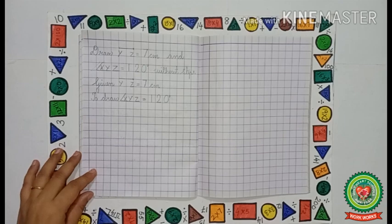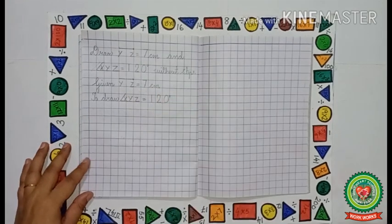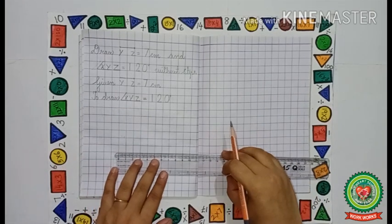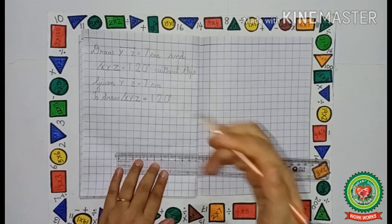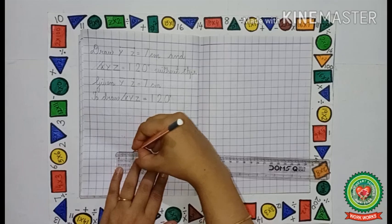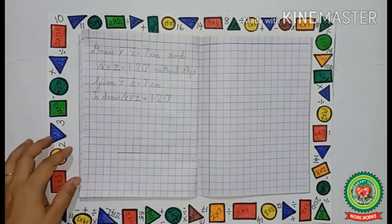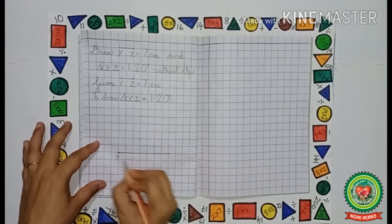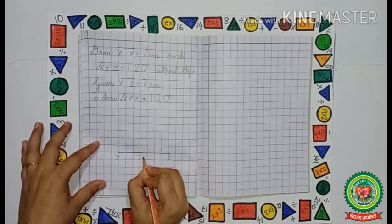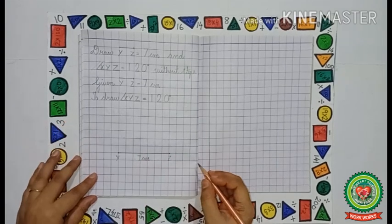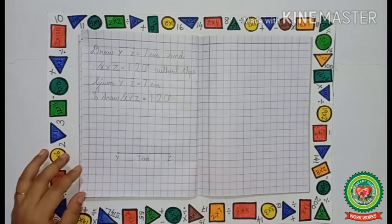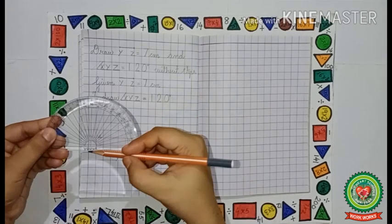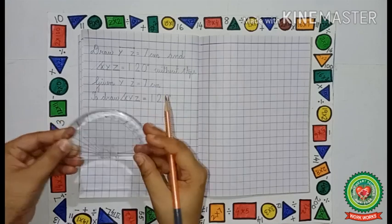First of all, we will draw the line segment YZ of 7 centimeters using a scale. Let us measure from 0 till 7 centimeters and draw a straight line. Now we have drawn line segment YZ, 7 centimeters. Since we have to draw an angle on the left hand side, we will place the protractor at Y, placing the upside down T — that is the middle line — at Y.